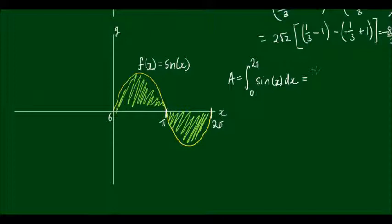First of all, the antiderivative of sin(x) is negative cos(x). And this is bounded by 2π at the upper limit and 0 at the lower limit. And if I was to substitute in the values I would get negative cos(x) minus cos(x).